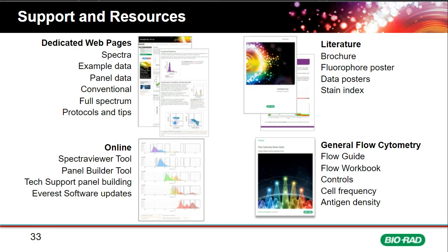Bio-Rad provides extensive support resources including dedicated web pages with StarBright data — spectra and panel data for conventional and full spectrum flow — online tools such as a spectra viewer and panel building tool, technical support for panel building, and regular software updates for the ZE5. General flow cytometry literature is also available including fluorophore posters, data posters, flow guides, and workbooks covering topics like experimental controls.